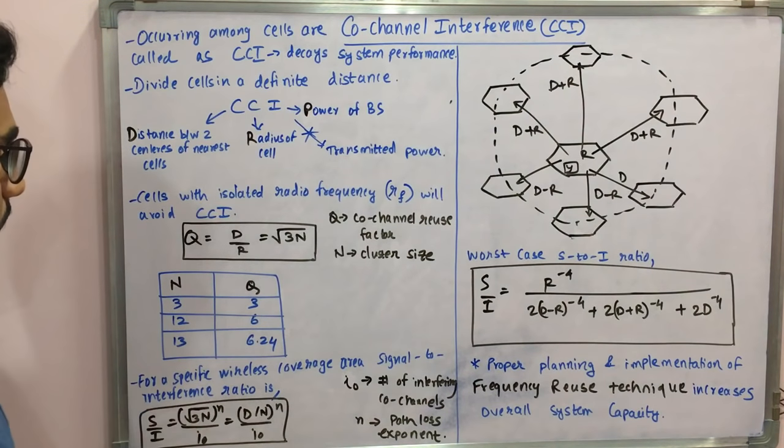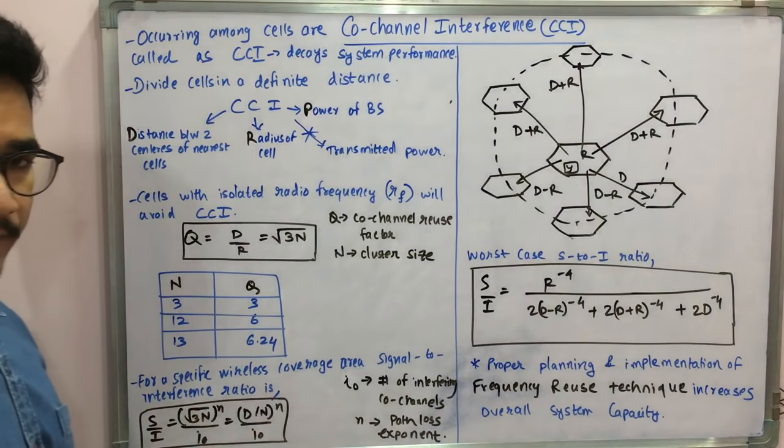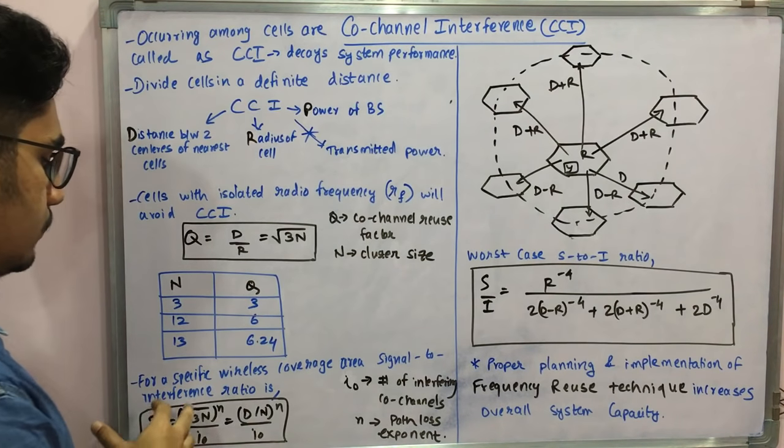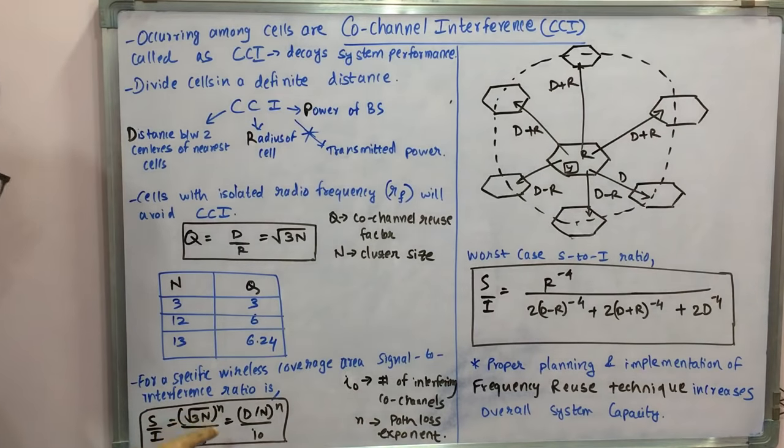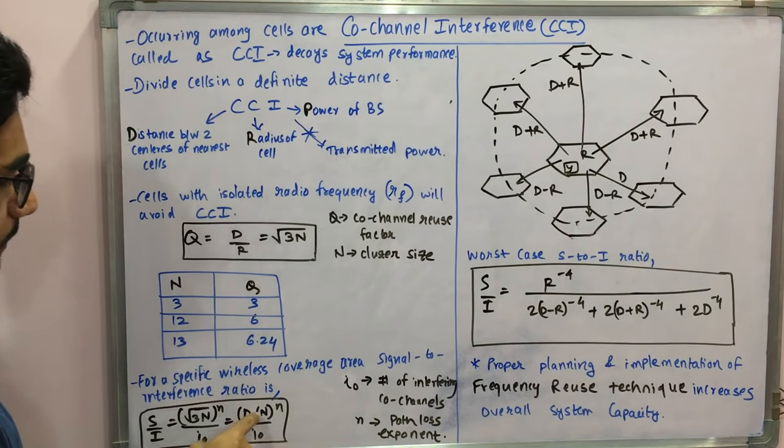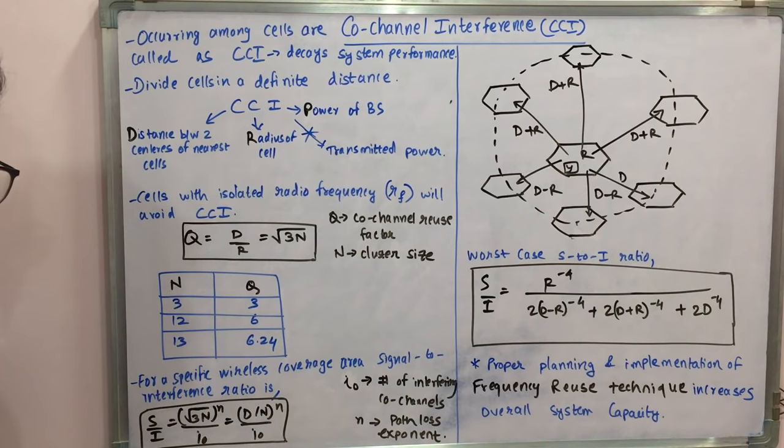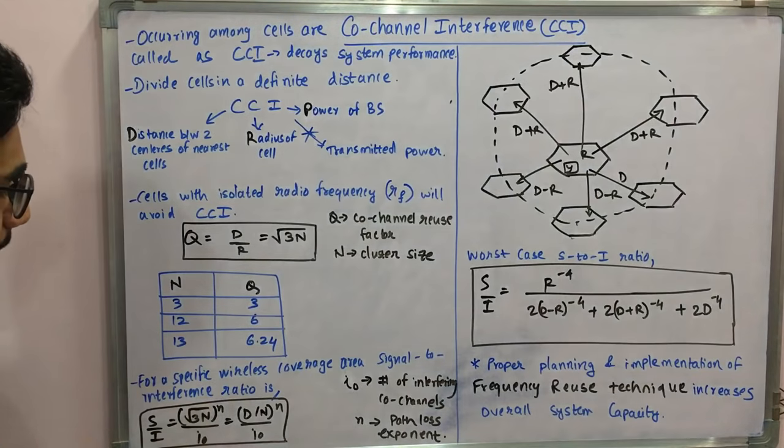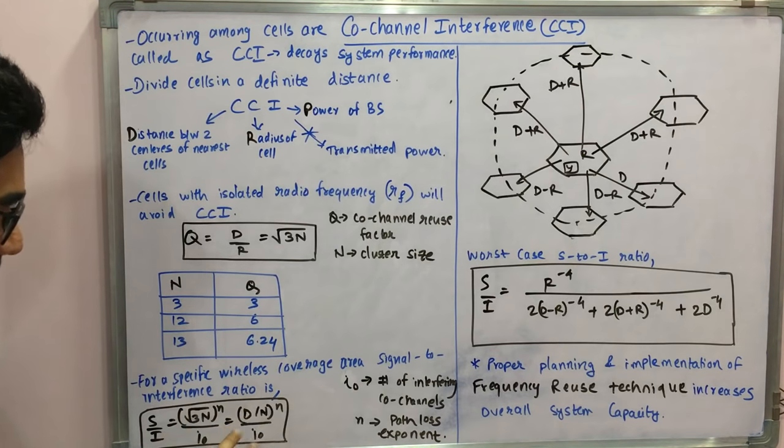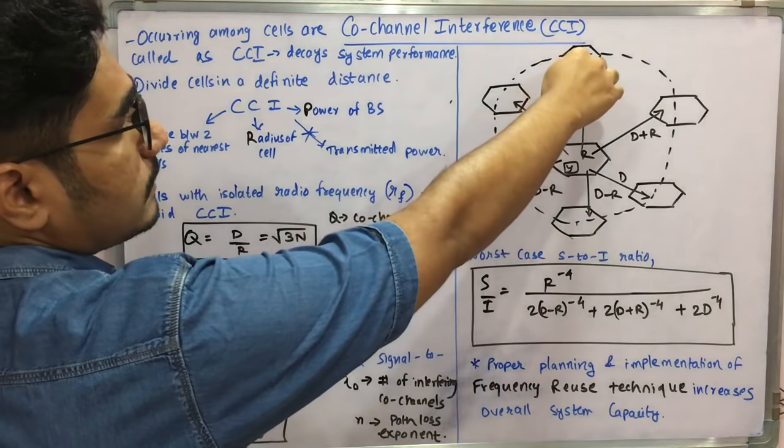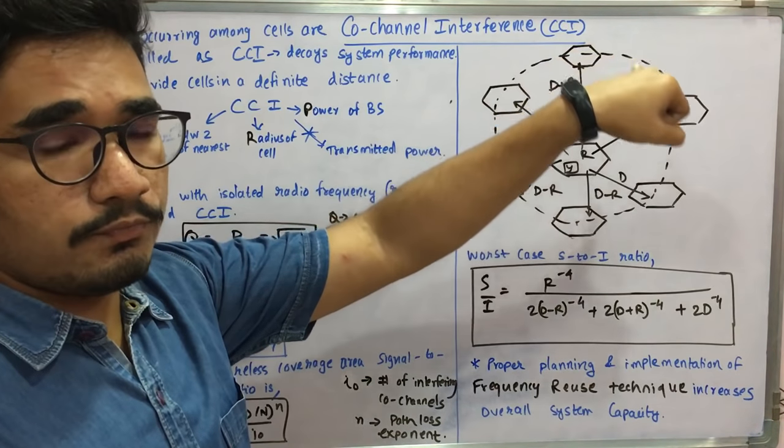For example, for a specific wireless coverage area, the signal to interference ratio which you can get is represented by S divided by I, which is equal to under root 3n, the whole raised to n, that is small n divided by io. This is given as d by r where you substitute this and to the base you have this cluster size n, and io is there and the whole raised to n. So here you have S as the signal, I as the interference caused due to some other signals, then you have n that is the cluster size, and then you have two terms, io and n. Io is nothing but the number of interfering co-channels.